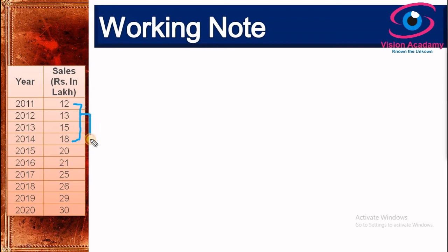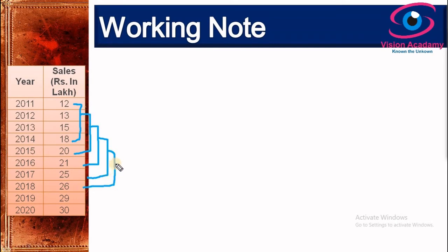For the second value, we consider another four values after discarding the oldest value. For the third value, we again discard the oldest and add a new value. This continues until all values in the data set are exhausted, always maintaining a group of four values.